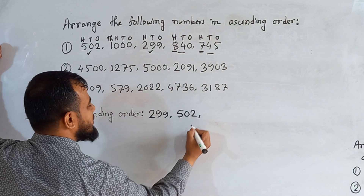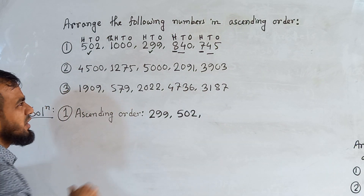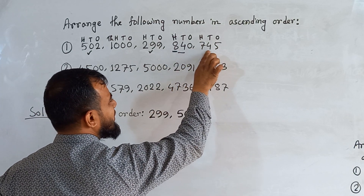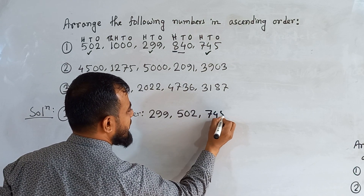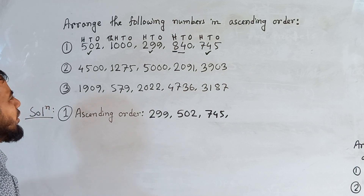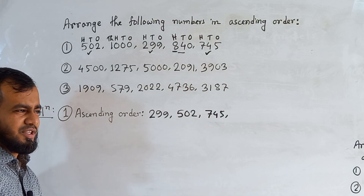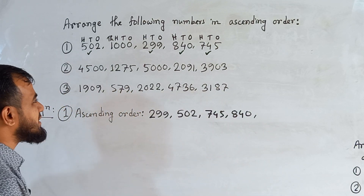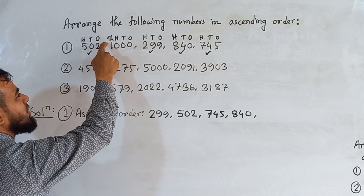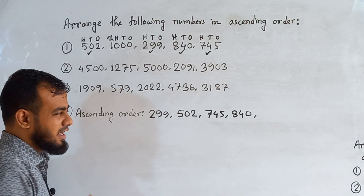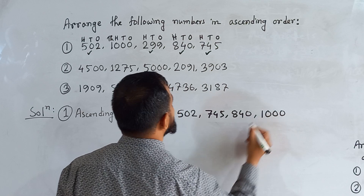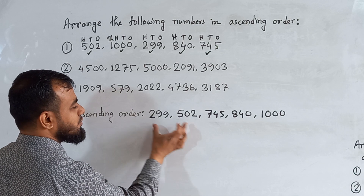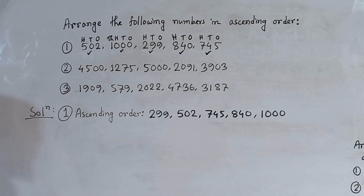Now we have 8 and 7 remaining in the hundreds place. Between 8 and 7, seven is the smaller, so 745 is our next number. Then 840 follows. Finally, the number with the thousands place — 1000 — is the largest and goes last. So the ascending order is: 299, 502, 745, 840, 1000.